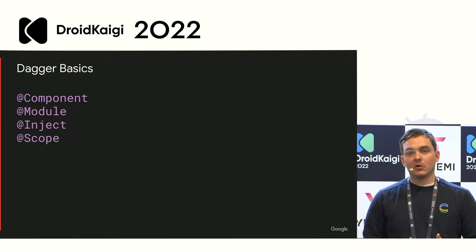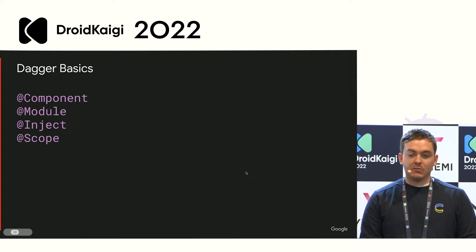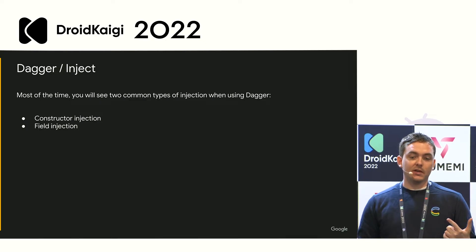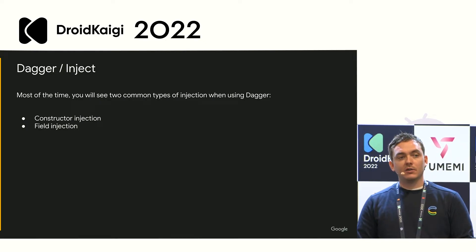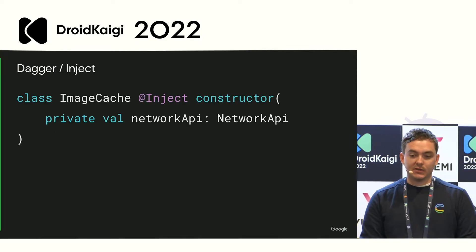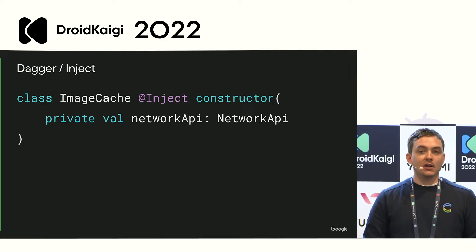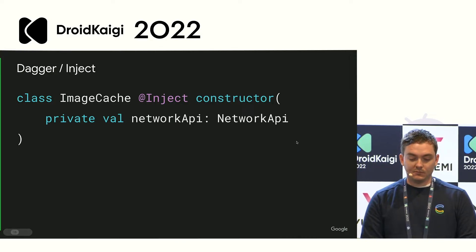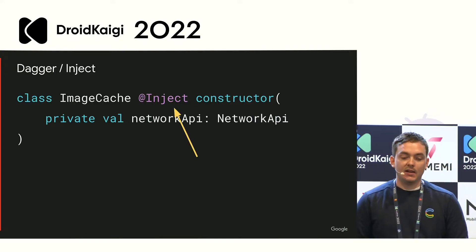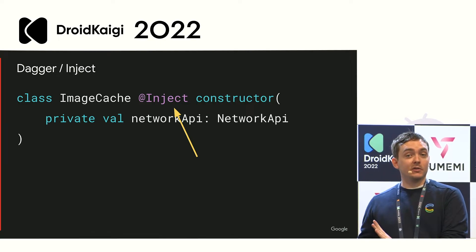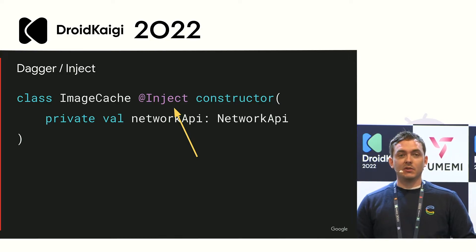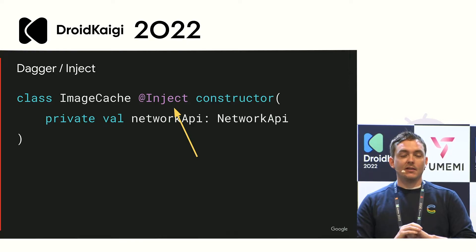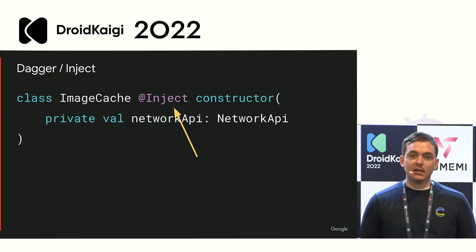The first thing we'll talk about is inject. There are two types of injection: constructor injection and field injection. We've only seen constructor injection so far — you put @Inject in front of the constructor. This is the simplest way to do injection; everything is provided when the object is created. What you're telling Dagger is: write all the code for creating this object whenever I ask for it. Behind the scenes, Dagger will actually write a module for you, so you don't have to write it. This is the preferred approach.